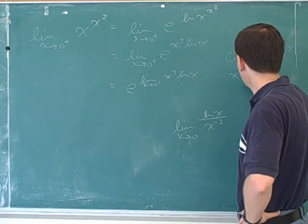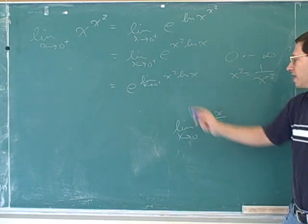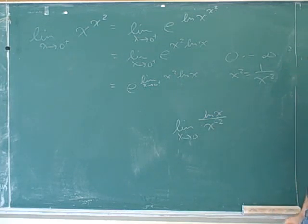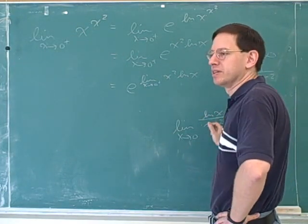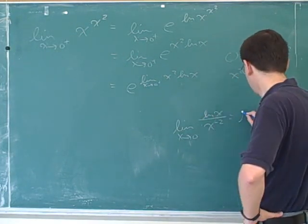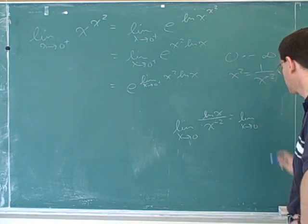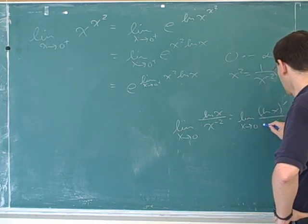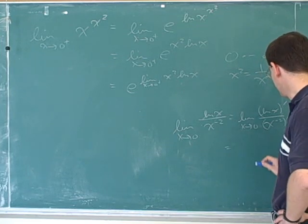Well, x squared is the same as 1 over x to the negative 2. So, we can rewrite this like this. And now it's a quotient, which lets us use L'Hôpital's rule. And L'Hôpital's rule says we can just take the derivative of the top and the bottom. And that will be the same limit.